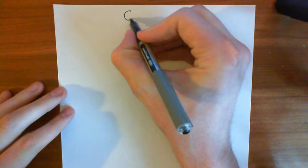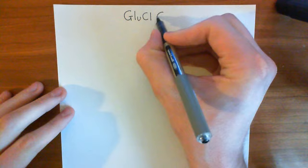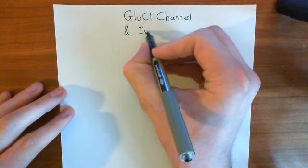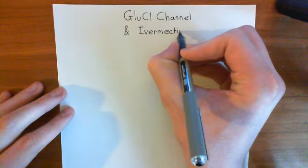Welcome to this next video in the playlist on cis-loop ligand-gated ion channels. In this video, we're going to talk about something known as the GluCL channel, and we're also going to talk about the mechanism of action of the drug ivermectin.